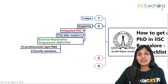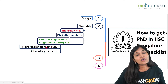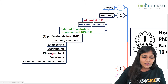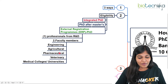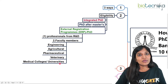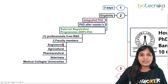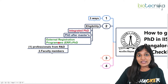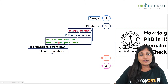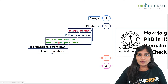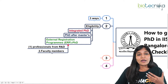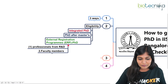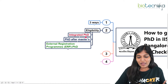For the External Registration Program, it is for people working in biopharma or biotechnology companies in R&D departments, or faculty members from government-aided colleges, government organizations in engineering, agriculture, pharmaceutical, veterinary, or medical universities — including MBBS and MD professors from government institutions. For external registration, the organization where they are working must fund them, not the national fellowships like DBT or ICMR. The company or institution takes financial responsibility.